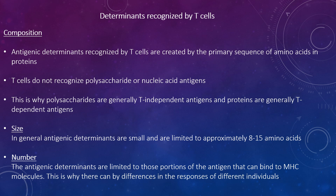Antigenic determinants recognised by T-cells are created by the primary sequence of amino acids in proteins — T-cells do not recognise polysaccharide or nucleic acid antigens. This is why polysaccharides are generally T-independent antigens and proteins are T-dependent antigens. The determinants need not be located on the exposed surface of the antigen, since recognition by T-cells requires that the antigen be proteolytically degraded into smaller peptides. Free peptides are not recognised by T-cells; rather, peptides must be associated with molecules coded for by the major histocompatibility complex (MHC). In general, antigenic determinants for T-cells are small and limited to approximately 8–15 amino acids.